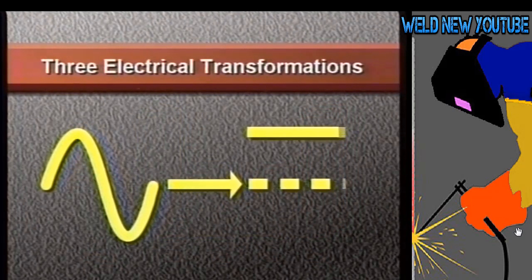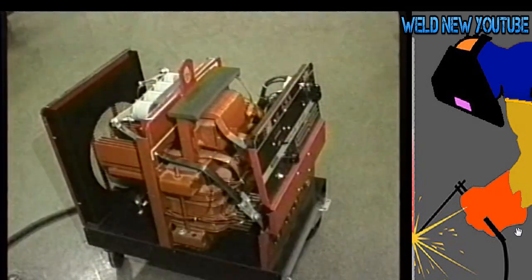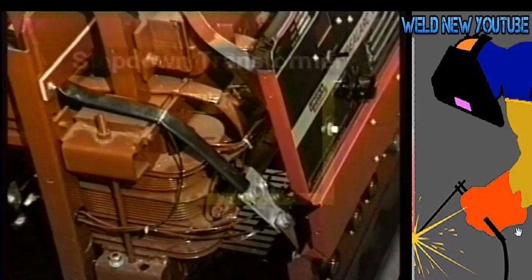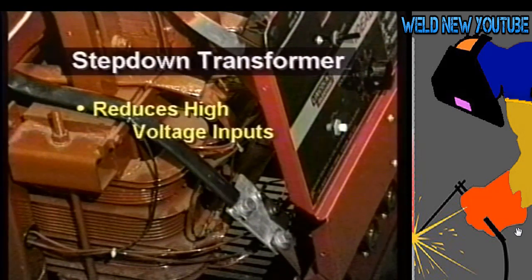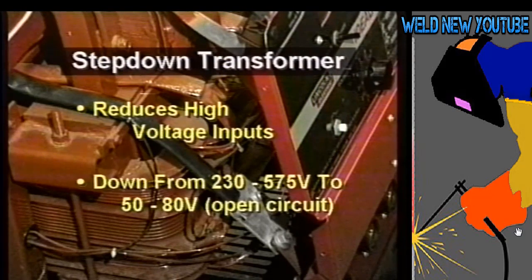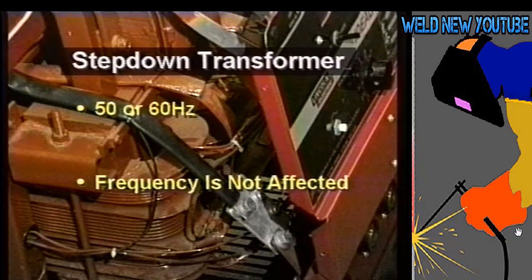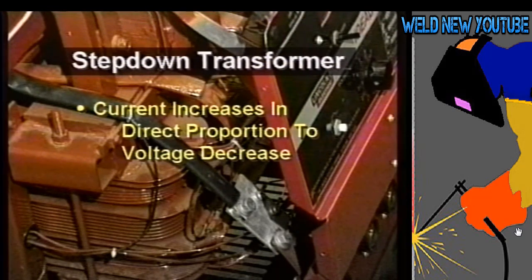Finally, AC power is converted to DC power. To accomplish these transformations, a standard electric arc welder contains three main electrical components. First, the step-down transformer reduces the relatively high input voltages — usually ranging between 230 and 575 volts — down to about 50 to 80 open circuit volts, which means before welding starts. The alternating current can have a frequency of 50 or 60 hertz; the transformer does not affect the frequency. The supply and output alternating current remain at 50 or 60 hertz, but the current, or amperage, increases in direct proportion to the voltage reduction — just what we want.